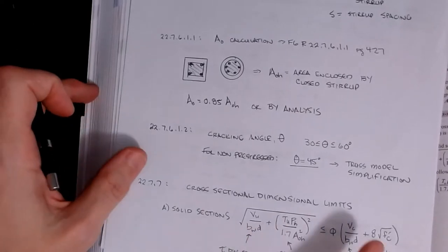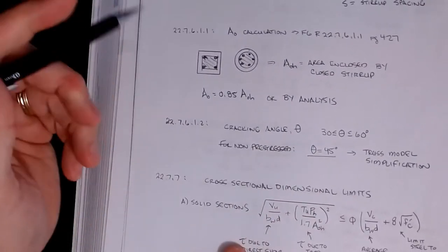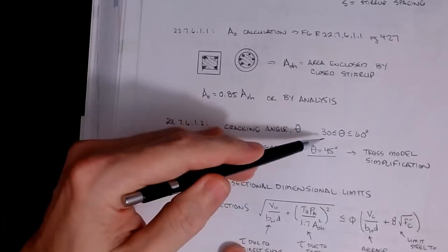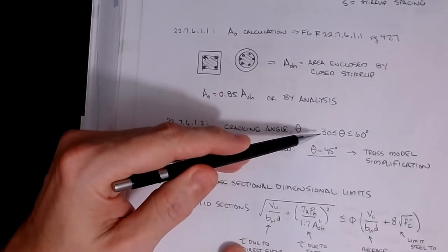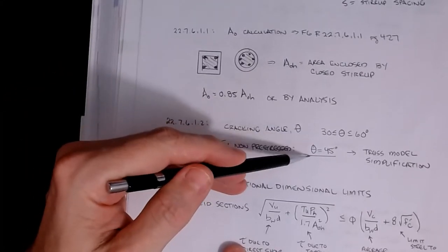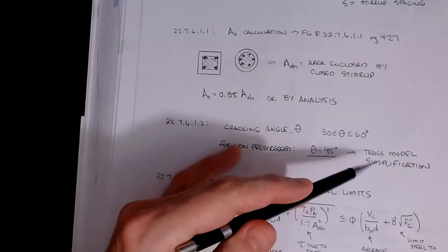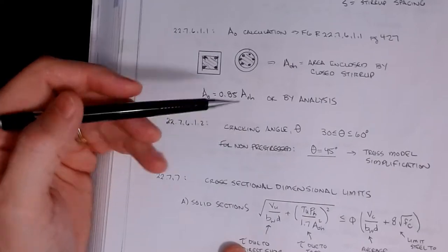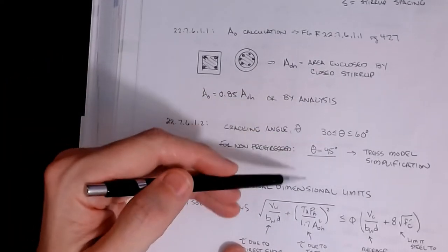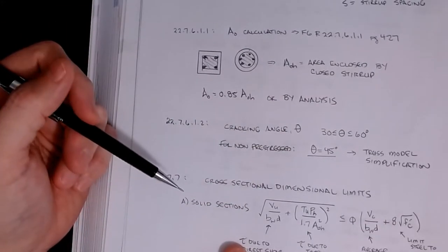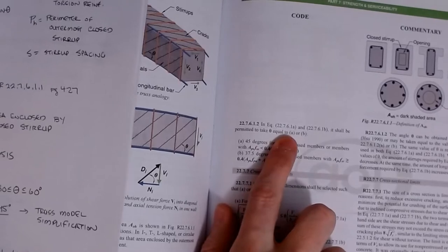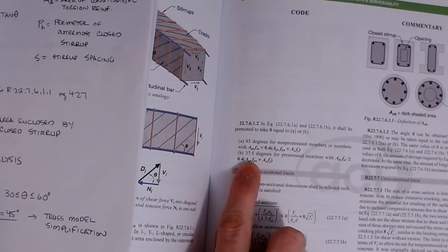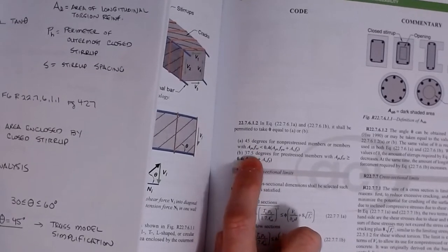For selecting theta from the truss model, you're allowed to use anywhere between 30 and 60 degrees. For prestressed sections theta is generally around 37.5 degrees. For non-prestressed sections theta is taken as 45 degrees — that's the truss model simplification used in the ACI code. You can use any angle in the allowed range, but 45 degrees is the easiest and most straightforward, and it's explicitly spelled out in the code.